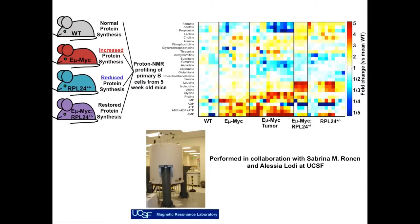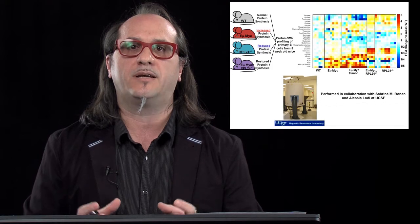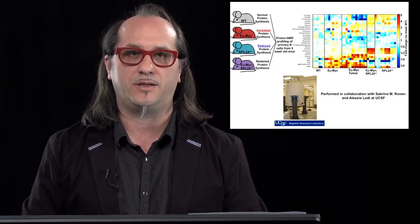We performed an unbiased approach employing proton NMR profiling. What we discovered was that restoring protein synthesis to normal levels downstream of MYC specifically affected a metabolic pathway associated with nucleotide production. This is represented in this heat map, where red squares represent increased metabolites more abundant in MYC-overexpressing cells, and those restored to normal levels are represented by white or blue squares in the EMU-MYC L24 condition where protein synthesis is back to wild type. This was our first observation linking protein synthesis to a specific metabolic pathway associated with nucleotide production.